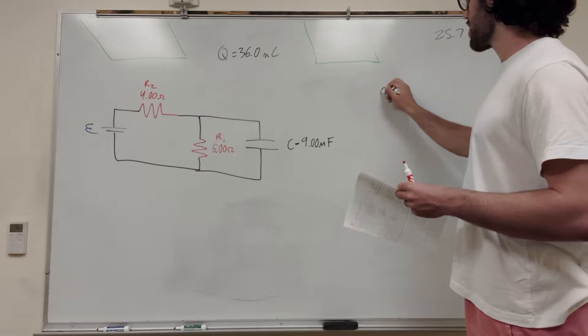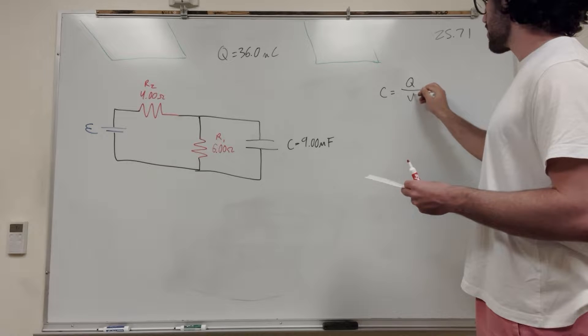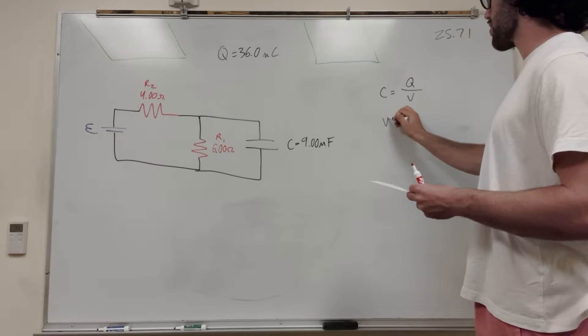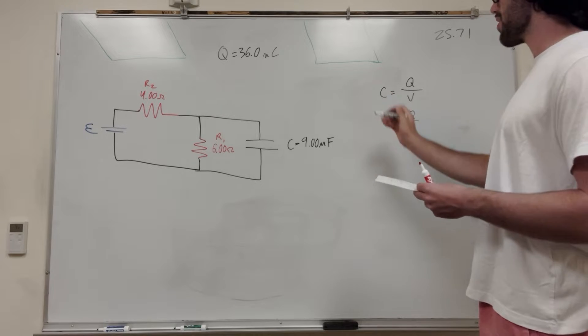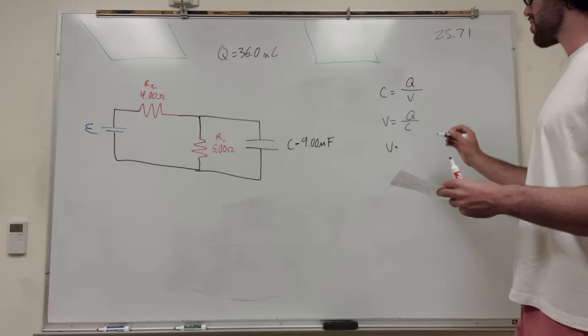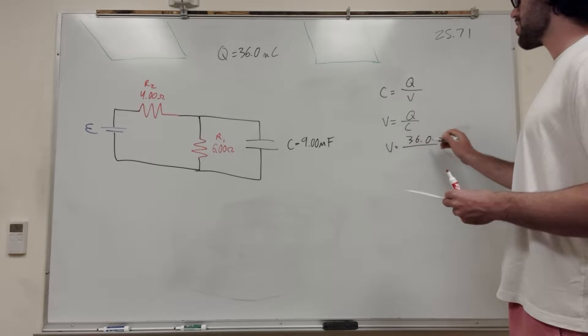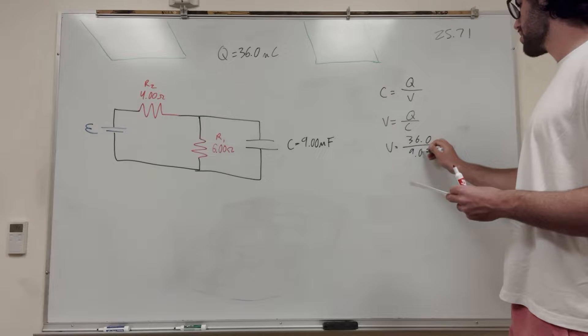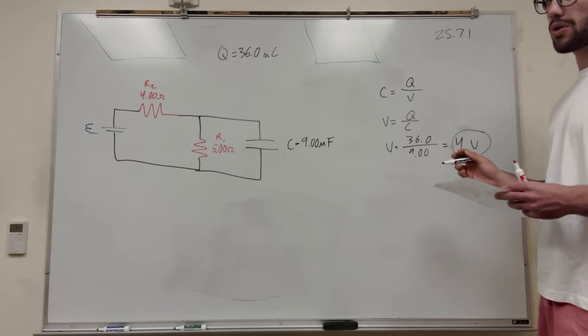We know the equation of capacitance is equal to charge over potential, C equals Q over V. So we're looking for potential, we're going to multiply V over and divide by C, V equals Q over C. We don't have to worry about units because they're both in micro. So it's going to be 36 over 9, which gives us that our voltage is equal to 4 volts.